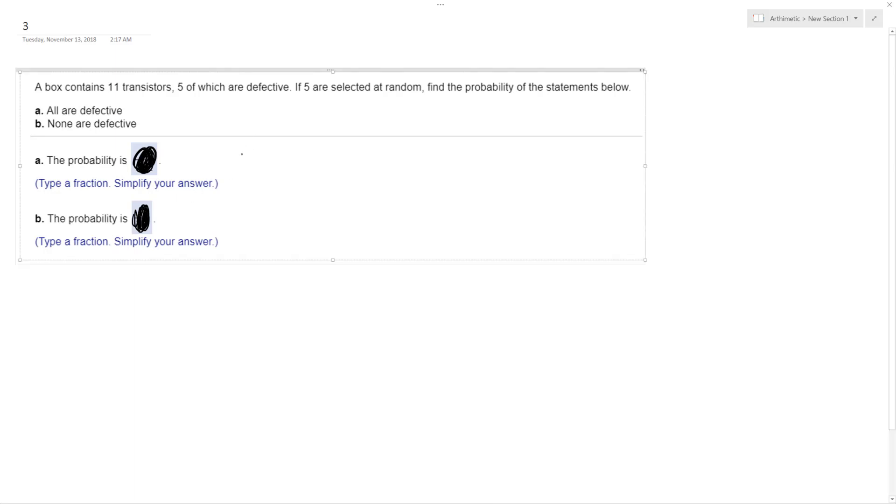There's five that are defective, so there's a five out of 11 chance the first one we pick is going to be defective. Then each event in this case is dependent on the previous one, so it's going to be four out of 11, assuming we did pick one that was defective. Oh, it's not four out of 11, it's four out of 10 because you took that one out of the box. So three out of nine times two out of eight times one over seven.